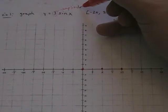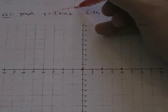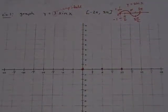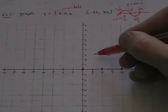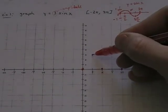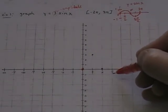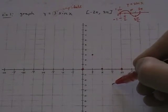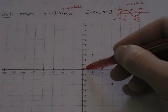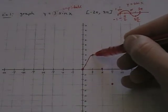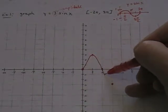This is called the amplitude term, and it affects the height of the graph. The graph normally goes to a height of 1 — it is now going to go to a height of 3. And it normally goes to a valley of negative 1 — now it's going to go to negative 3. So what we have is a sine graph that looks just like the base graph but taller.